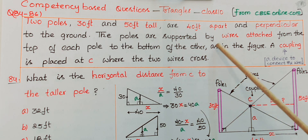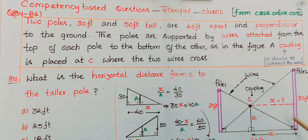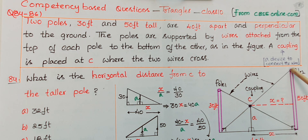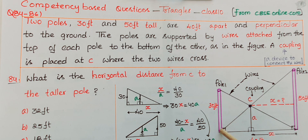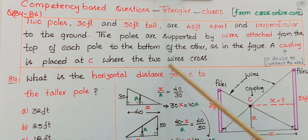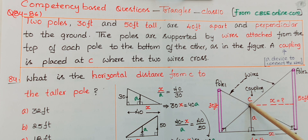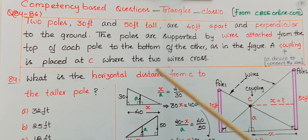The poles are supported by wires attached from the top of each pole to the bottom of the other, as in the figure. One wire goes from the top of the first pole to the bottom of the second, and another from the top of the second pole to the bottom of the first. A coupling is placed at C where the two wires cross.